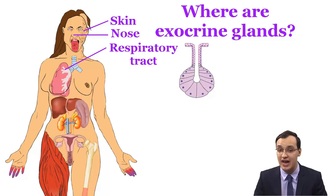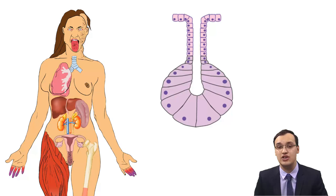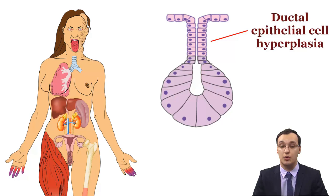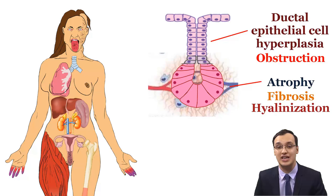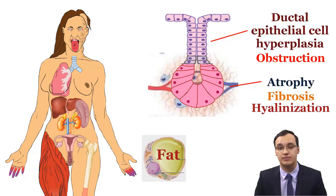Eventually this invasion leads to ductal epithelial cell hyperplasia, which causes duct obstruction. Later it leads to atrophy, fibrosis, and hyalinization of acini. Still later there is atrophy and replacement with fat of the parenchyma. We can explain it with one word: destruction.